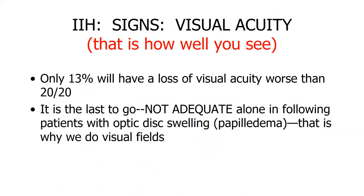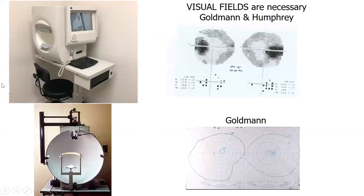Now for the signs — what we look for when we see patients. First is visual acuity, which is important but not sufficient, as it's the last thing to deteriorate. That's why we perform visual fields. Anyone who's done one knows the experience of putting your chin in the Humphrey or Goldman machine and pressing a button when you see a light. This is an example of a visual field we obtain in IIH patients.